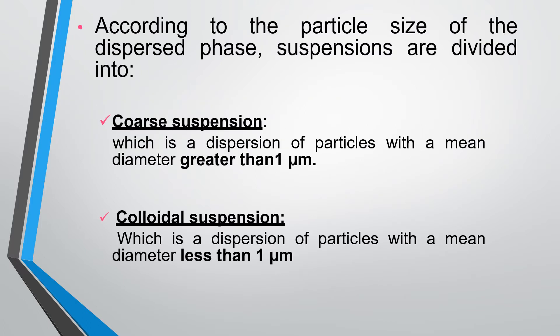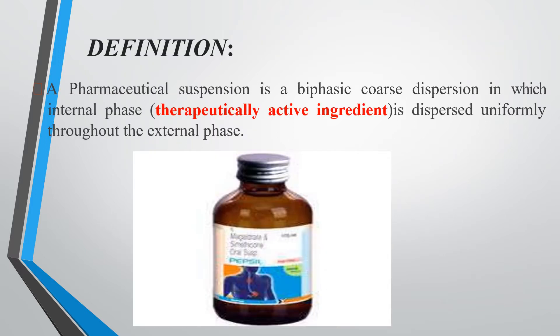According to particle size, suspensions are divided into two parts. First is the coarse suspension, where dispersed particles have a mean diameter greater than one micrometer. Second is the colloidal suspension, where dispersed particles have a mean diameter less than one micrometer.